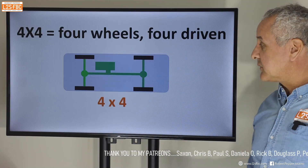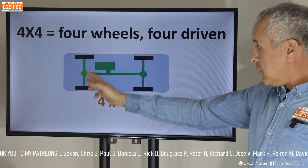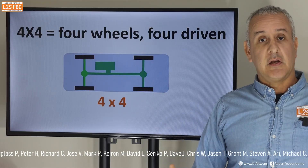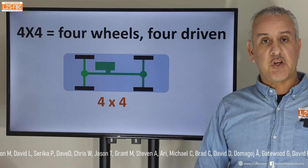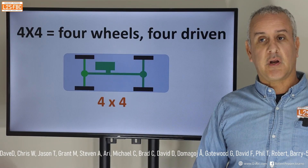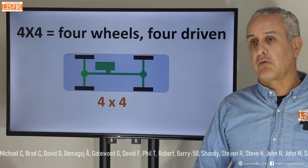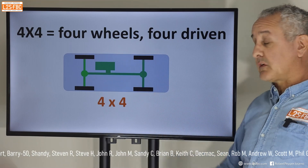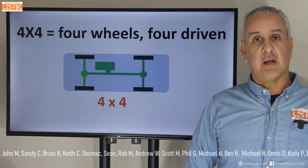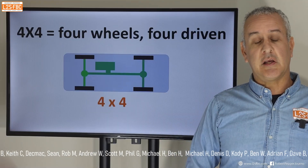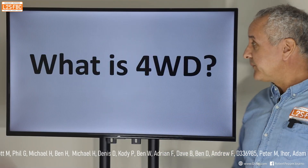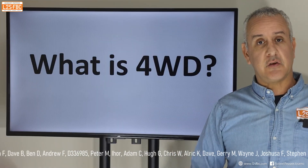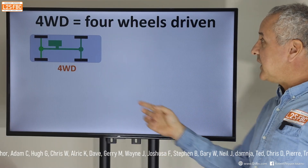So what is a four-by-four? The literal definition is four wheels, four driven — that is all it means. All four wheels are driven; how they're driven doesn't matter. There's nothing in the literal definition of a four-by-four that says it has to have a transfer case, low range, mud tires, or anything else. Just four wheels, four driven. We'll get to the commonly accepted usage in a moment.